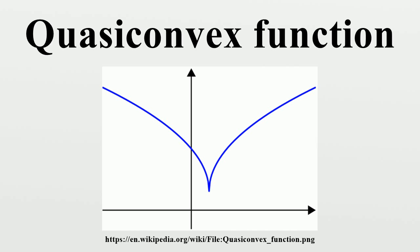If furthermore for all in, then is strictly quasi-convex. That is, strict quasi-convexity requires that a point directly between two other points must give a lower value of the function than one of the other points does.